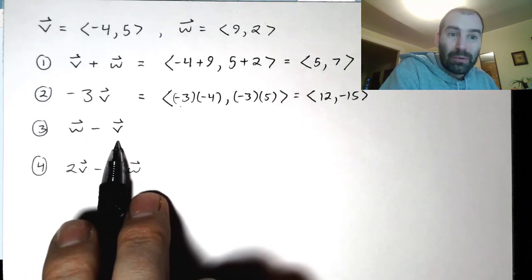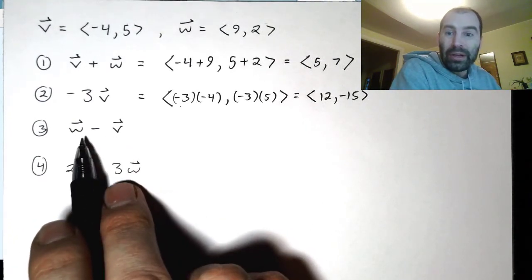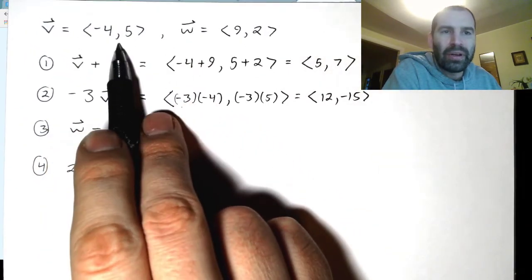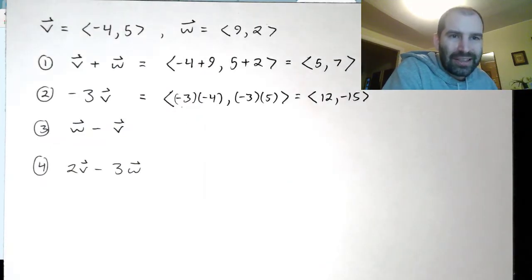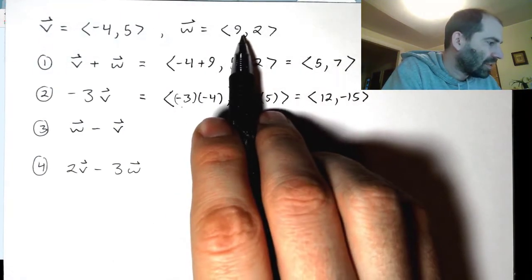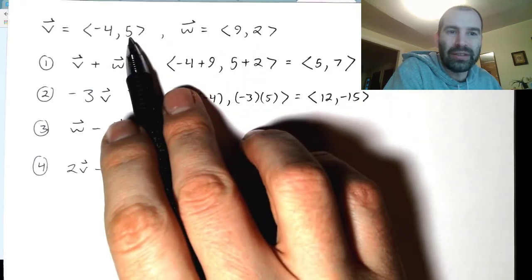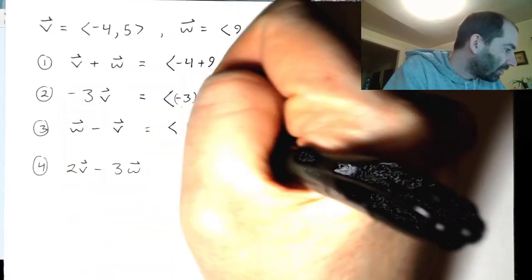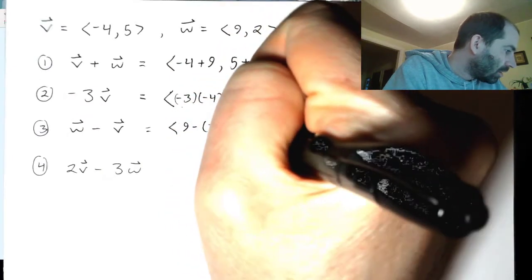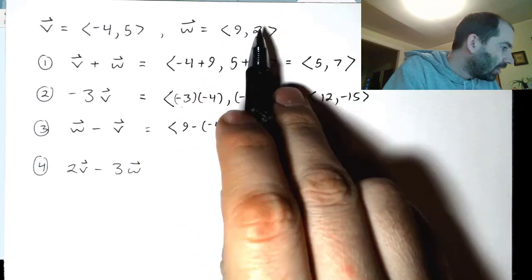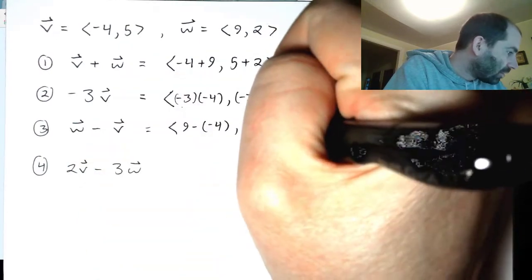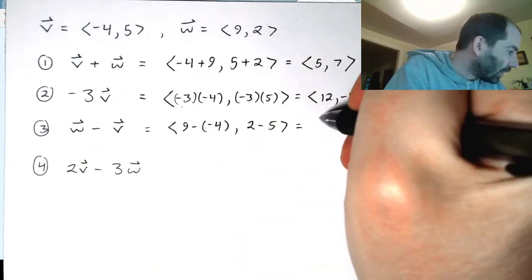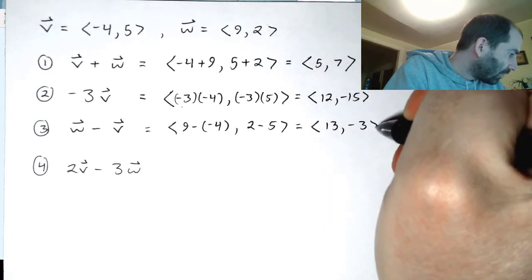What about subtraction? We said how to do this. We're going to take this is w minus v, so I'll take w and add negative 1 times v. Well, what you'll notice is, if you work that out algebraically, you'll see that that's just the same as subtracting these component-wise. So I'll just take 9 minus negative 4, and then 2 minus 5. So we get the vector 13, negative 3.